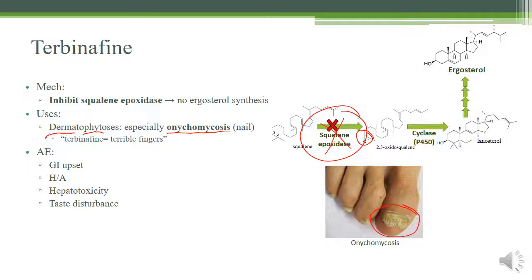Here's how onychomycosis looks. A mnemonic: instead of reading 'terbinafine,' think 'terrible fingers.' The adverse effects are fairly general — GI upset and headache are not high-yield. The most likely tested adverse effect is hepatotoxicity. In a clinical setting, taste disturbances are also important since patient compliance depends on the drug not tasting horrible.